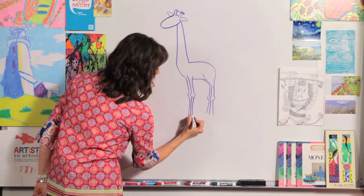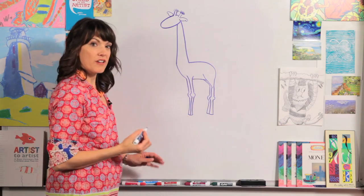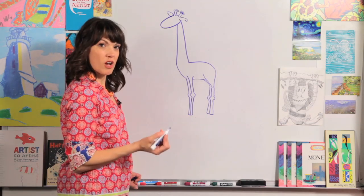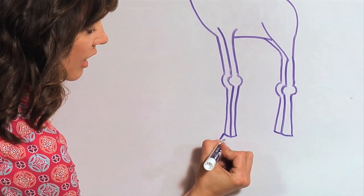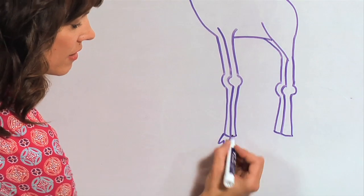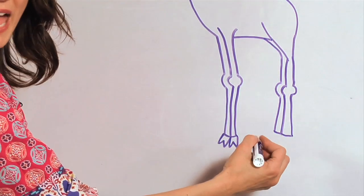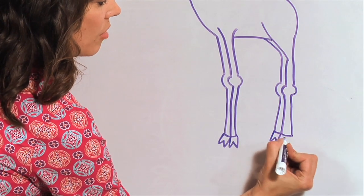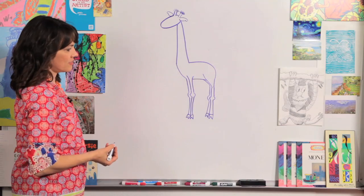Now, we are just going to draw some lines here right at the bottom. And for the feet, we're just going to draw a W. So we're just going to go down, up, down, up, and down, up, down, up. Same thing with the back feet. Down, up, down, up. Those W's make very very good hoofs.